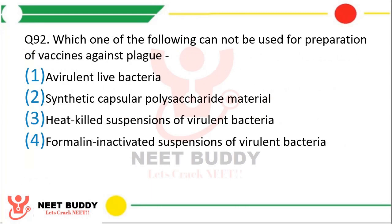Question number 92: Which one of the following cannot be used for preparation of vaccines against plague? Option 1: Avirulent live bacteria. Option 2: Synthetic capsular polysaccharide material. Option 3: Heat-killed suspension of virulent bacteria. Option 4: Formalin-inactivated suspension of virulent bacteria. The correct answer is Option 3; heat-killed suspension of virulent bacteria cannot be used for preparation of vaccine against plague.